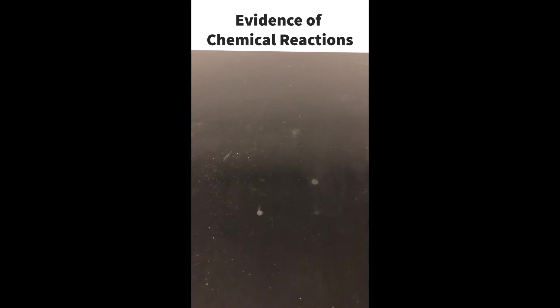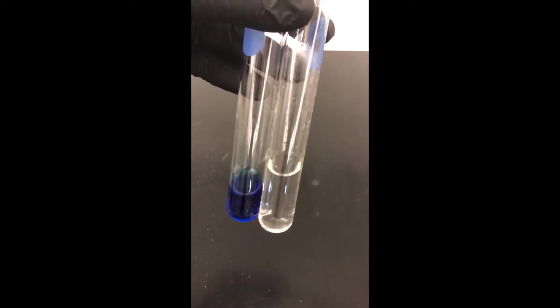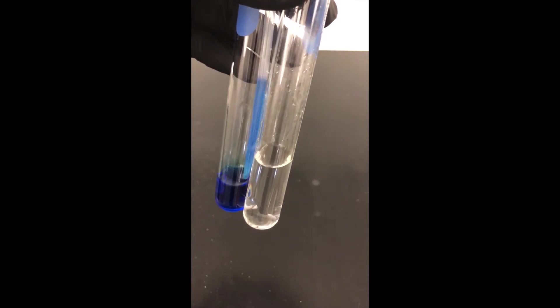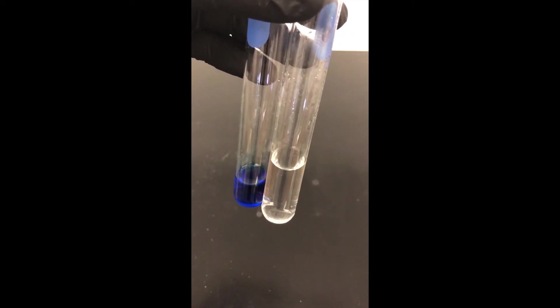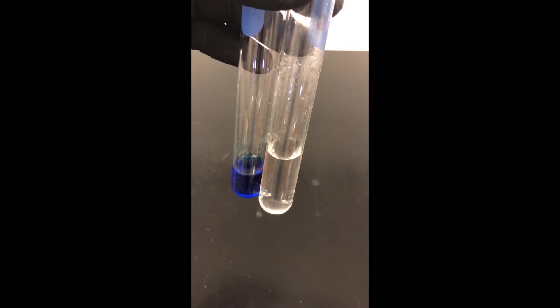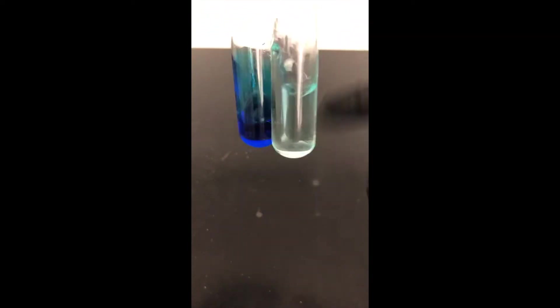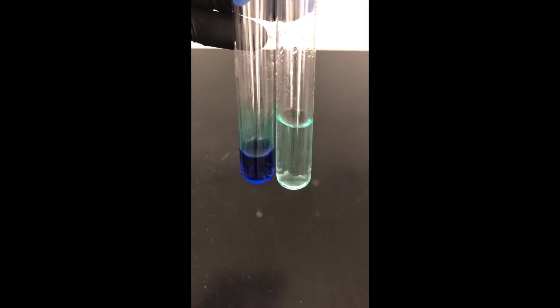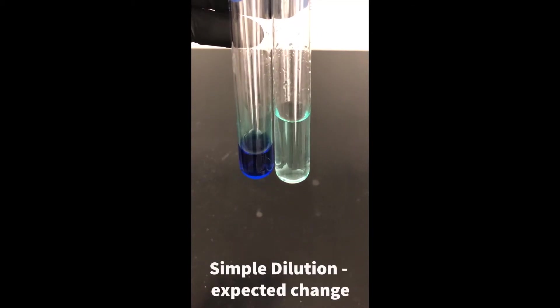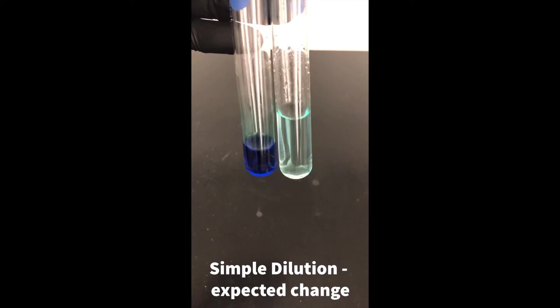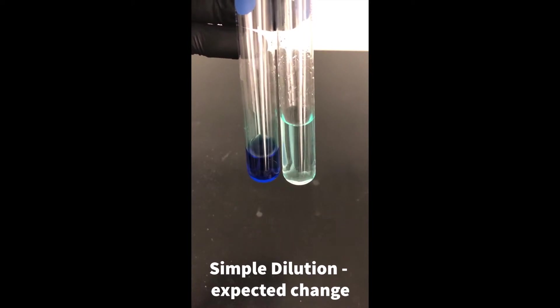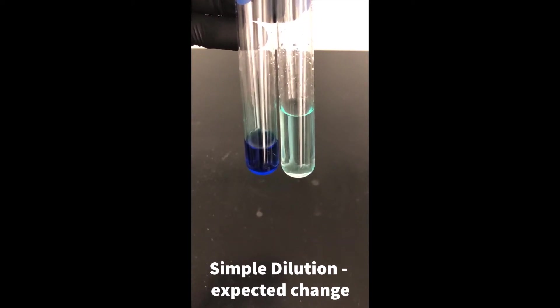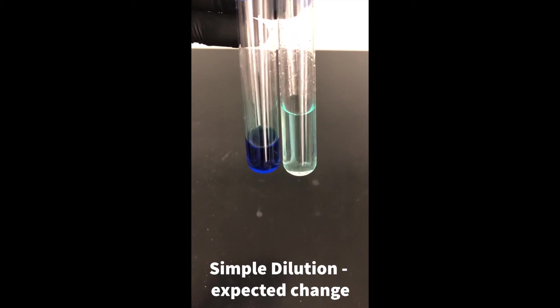Well, there are some changes that are expected. For example, I have here some water with blue food dye, and here's some water. I would expect that if I simply take a drop of the intense blue and put it in the water here, I would expect to get a lighter color because all I'm doing is diluting the dye. There is no chemical change involved. There seems to be a color change, but actually it's not—it's just a change in the intensity of the color.